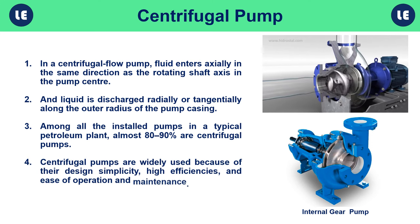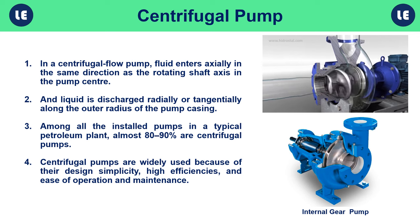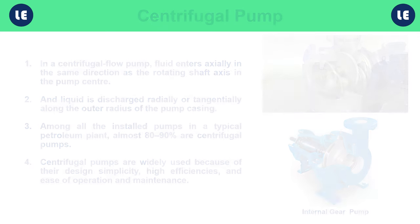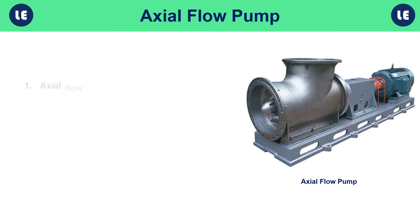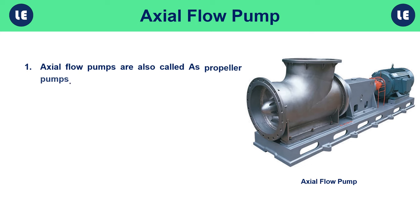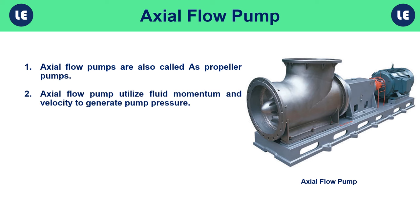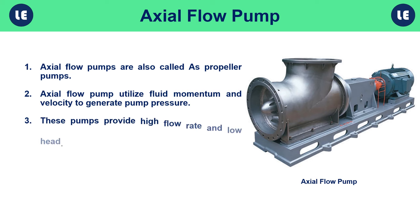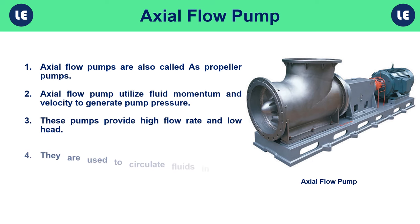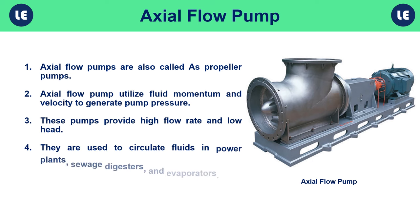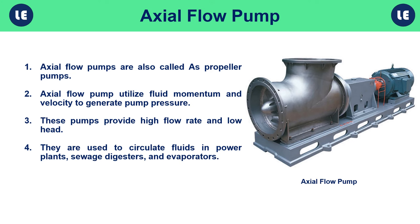Axial flow pumps, also called propeller pumps, utilize fluid momentum and velocity to generate pump pressure. These pumps provide high flow rates and low head, and are used to circulate fluids in power plants, sewage digesters, and evaporators.